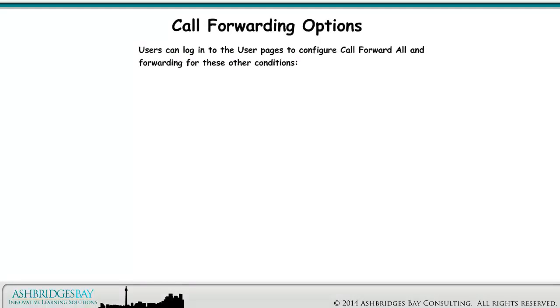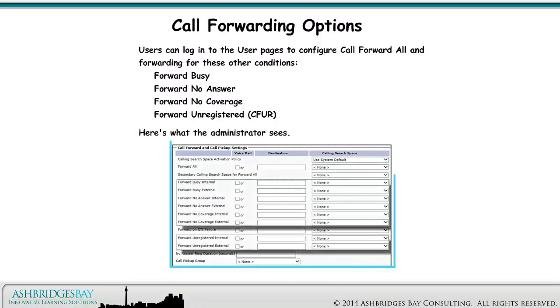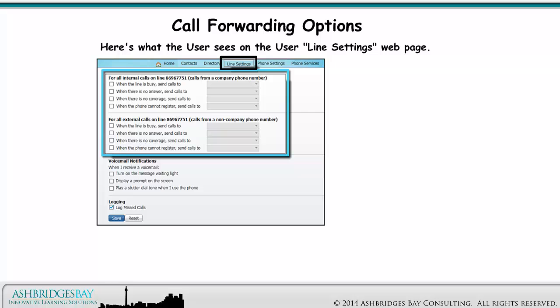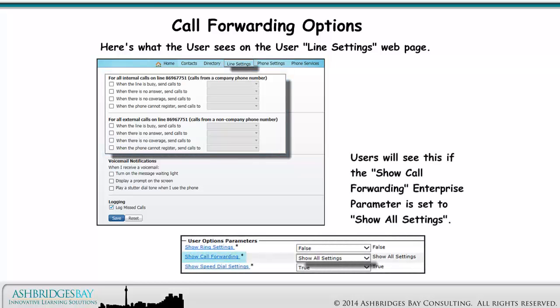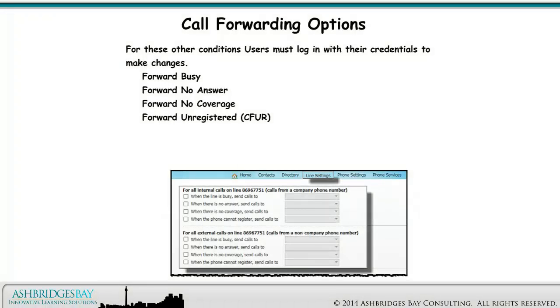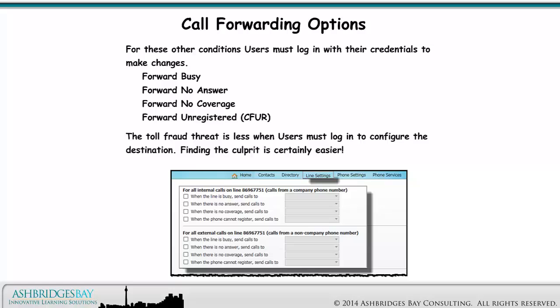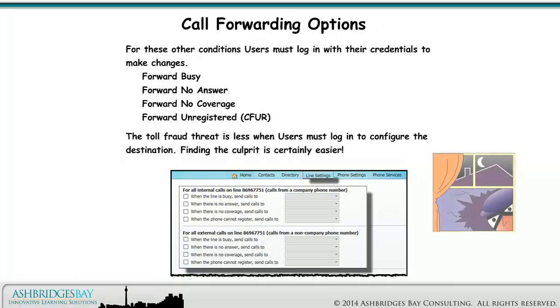Users can log into the user pages to configure call forward all and forwarding for other conditions: forward busy, forward no answer, forward no coverage, and forward unregistered. For these other conditions, users must log in with their credentials to make changes. The toll fraud threat is less when users must log in to configure the destination, and finding the culprit is certainly easier.